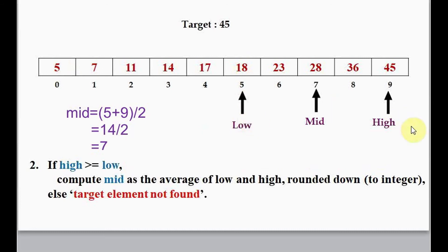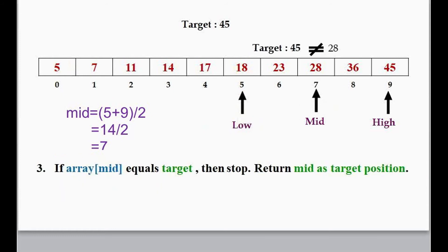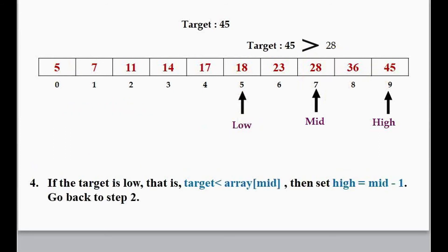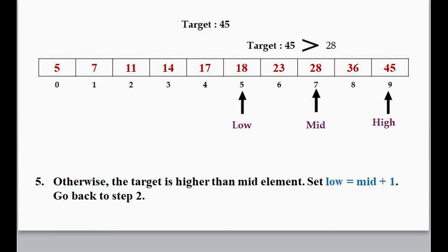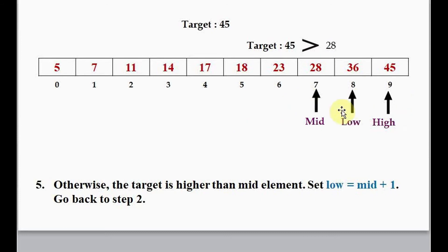Now we find the value of mid: 5 plus 9 divided by 2 gives 14 divided by 2, so mid is 7. We check array[mid], which is 28. We check if target equals array[mid] — no. We check if target is less than array[mid] — again, target is greater than array[mid], so we skip that condition as well. The else part: target is higher than mid element, so we set low equal to mid plus 1. Low becomes 8.